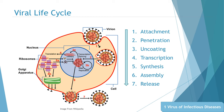Penetration: An unenveloped eukaryotic virus often gains entry via endocytosis, where the host cell is compelled to engulf the capsid, resulting in an endocytic vesicle. An enveloped eukaryotic virus gains entrance for its nucleocapsid when the viral envelope fuses with the host cell membrane, pushing the nucleocapsid past the cell membrane.